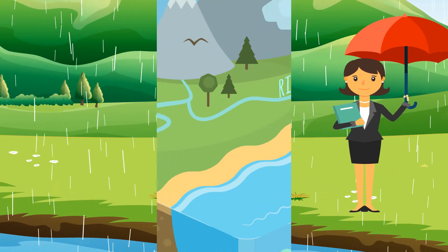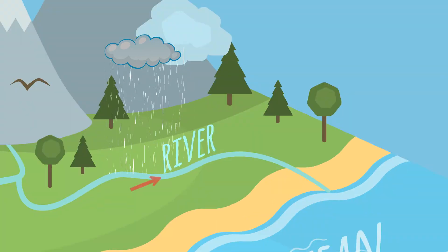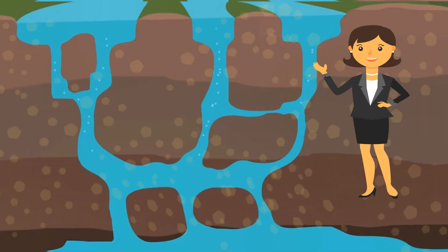As it rains, water gets collected into oceans, lakes, and rivers. This process is called collection. It even seeps through the soil and becomes groundwater.